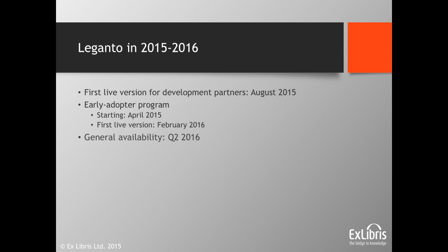Currently we are working with the development partners and assigning early adopters as of this month. We want the first version for development partners to be live in August — we are on track. The next version for early adopters will be in February next year, and then general availability at the summer of next year.